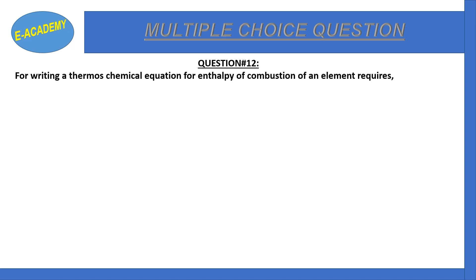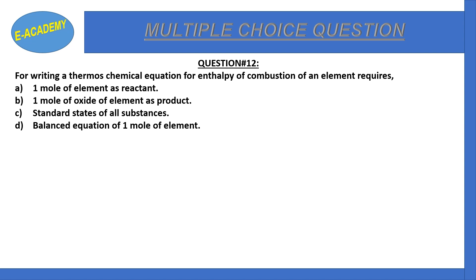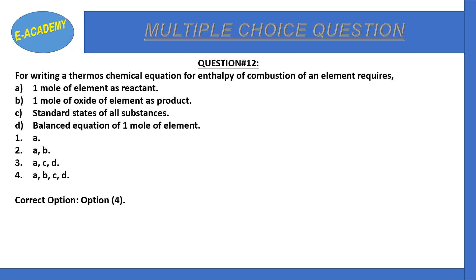Question number twelve: For writing a thermochemical equation for enthalpy of combustion of an element, what is required — 1 mole of element as reactant, 1 mole of oxide of element as product, standard states of all substances, or a balanced equation with 1 mole of element? All four properties are required when writing a thermochemical equation for combustion.